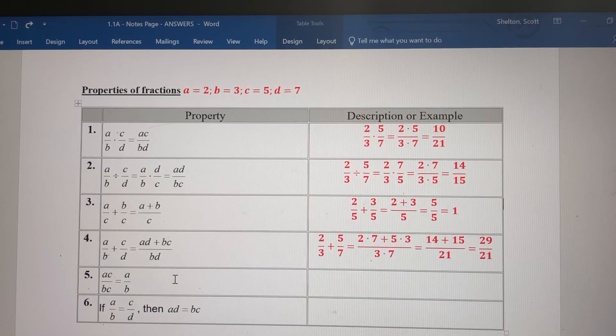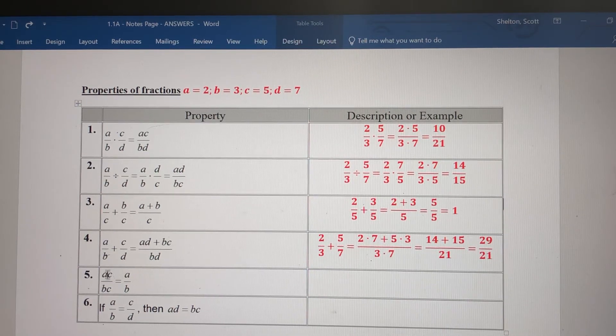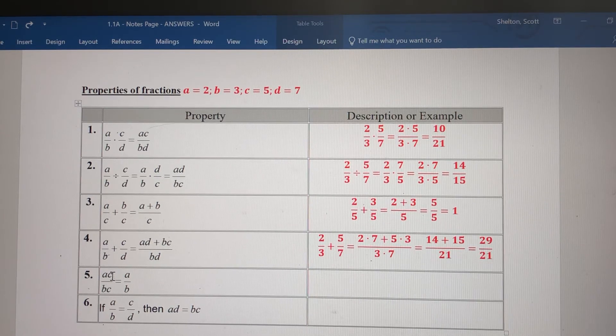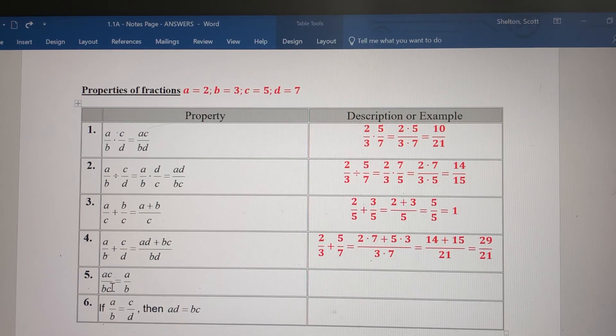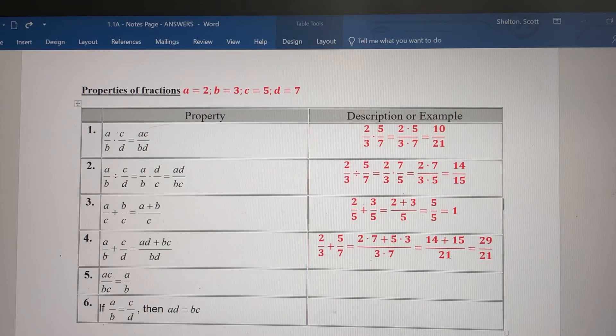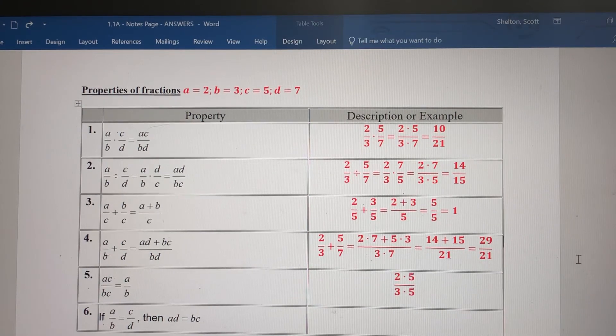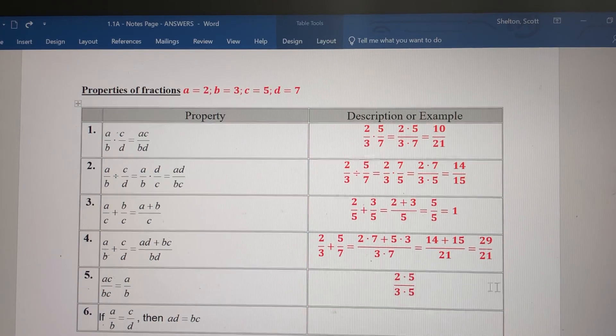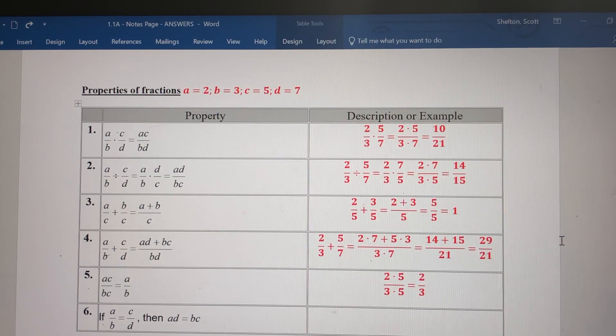Property 5 has to do with simplifying. If you have the product of two terms in the numerator and the product of two terms in the denominator, and one term is the same, you can divide those out. The Cs cancel out, leaving A/B. For example, 2 times 5 over 3 times 5 - the 5s cancel out, and the answer is 2/3.